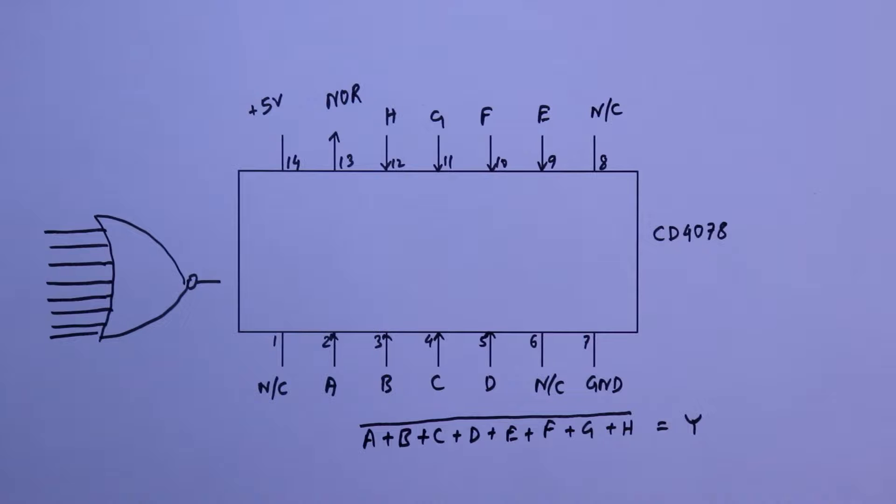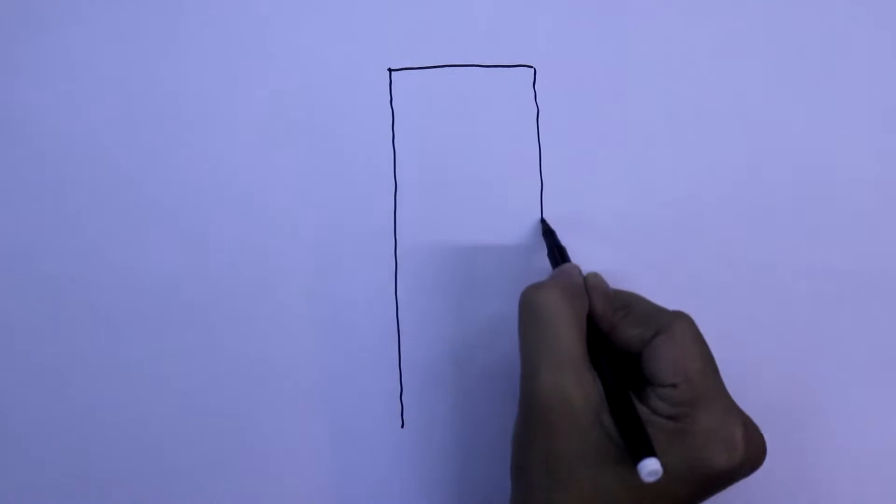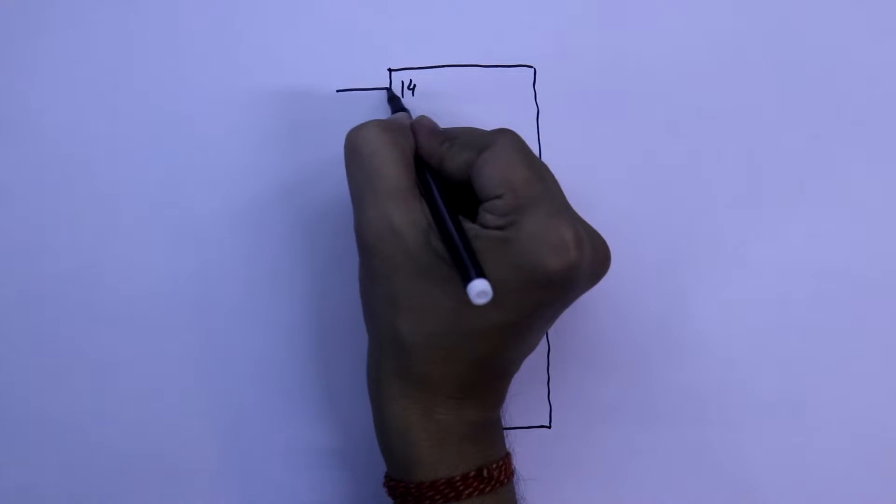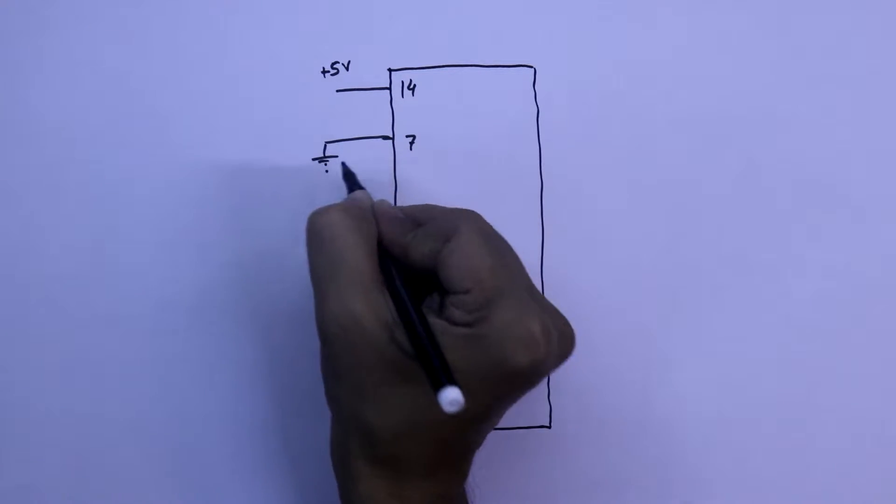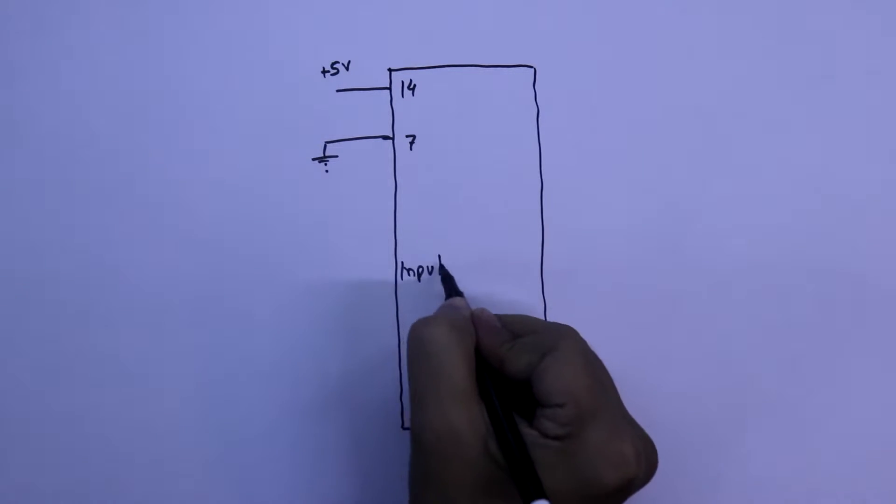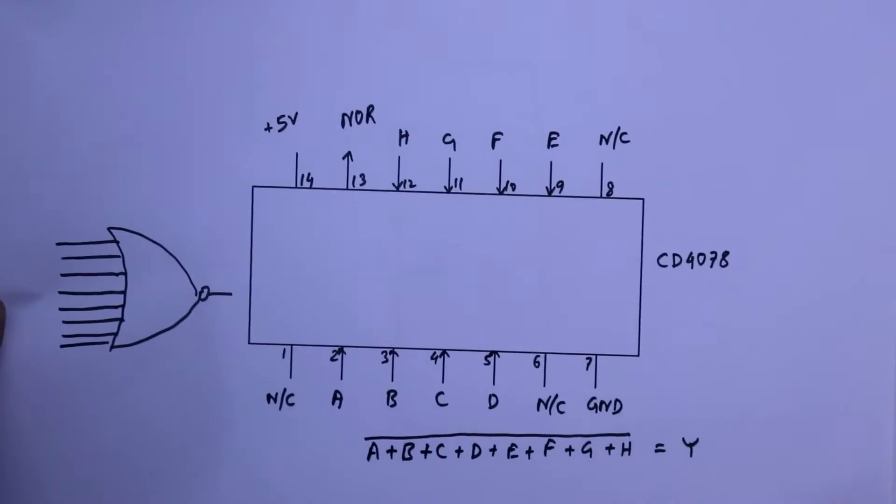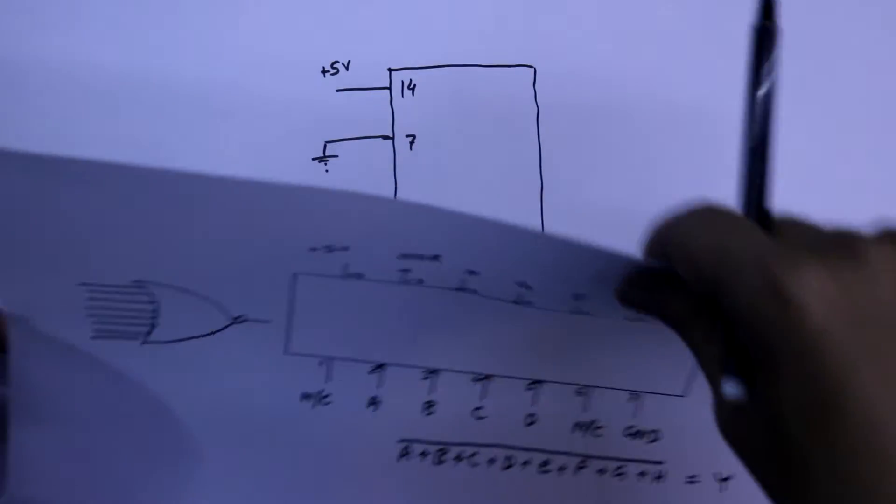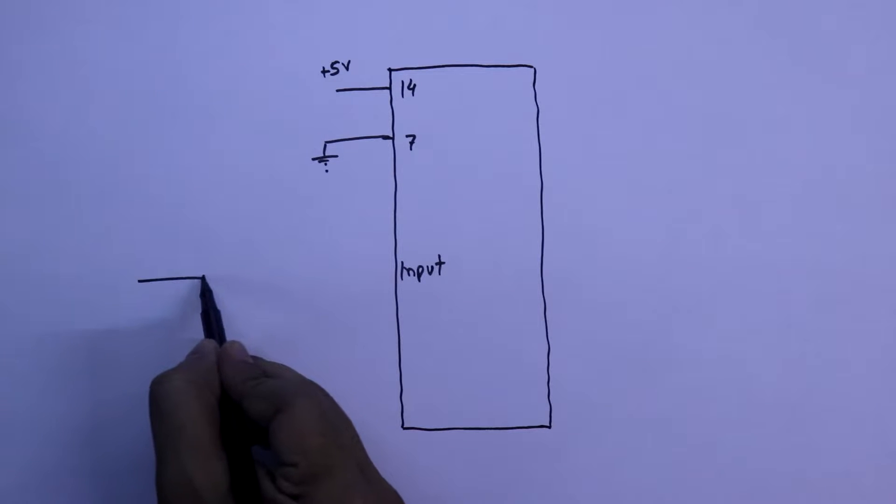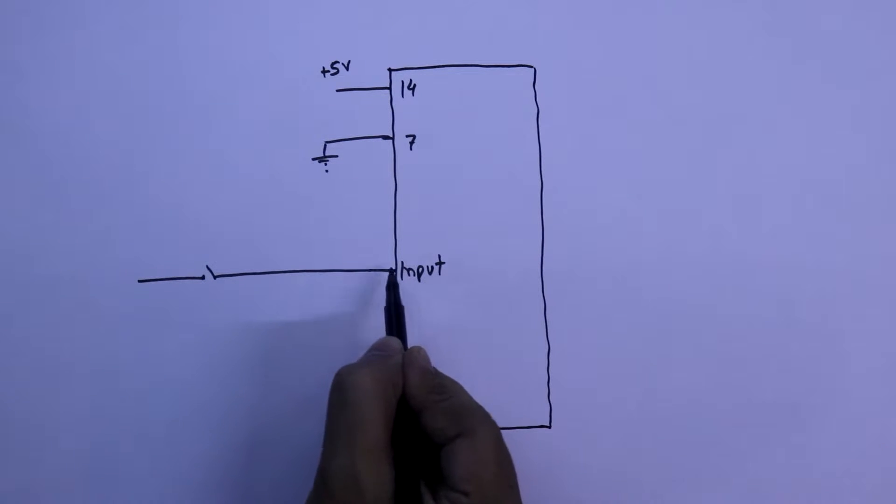In this video we are going to verify this output. For that we need a practical circuit. Here is our IC. With pin number 14 I am connecting plus 5V and with pin number 7 I am connected with ground. The input pins from pin number 2 to 5 and 9 to 12, we are going to connect a switch to provide the input.